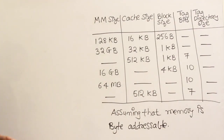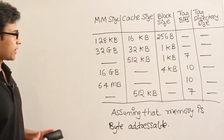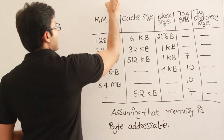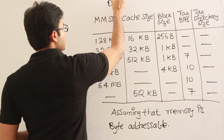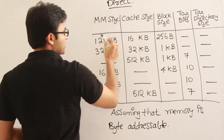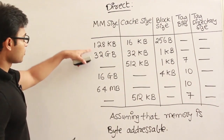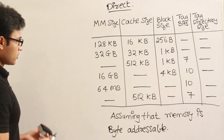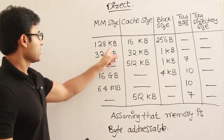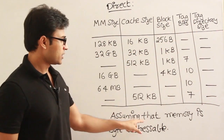This question is about direct mapping. Assume that direct mapping is used for caching. They have given some of the parameters and some parameters are missing.